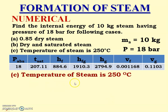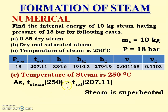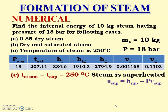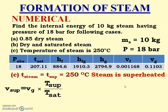For Case C, the given steam temperature of 250°C is greater than the saturation temperature of 207.11°C, confirming superheated steam. So T_steam = T_sup = 250°C. The specific internal energy of superheated steam: u_sup = h_sup − p·v_sup = hg + cp·(T_sup − T_sat) − (pressure in bar × 10² × v_sup). First, we must calculate v_sup.